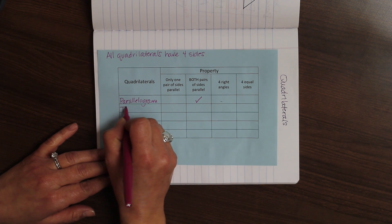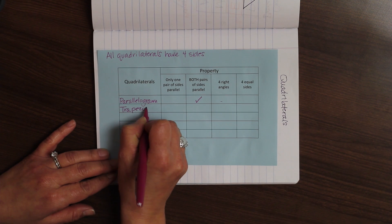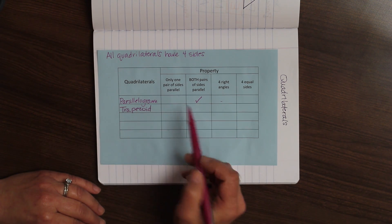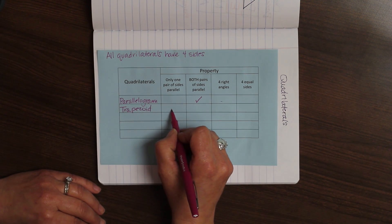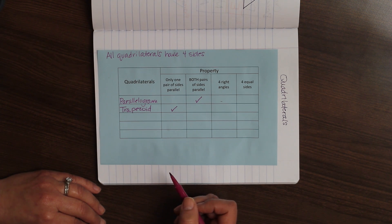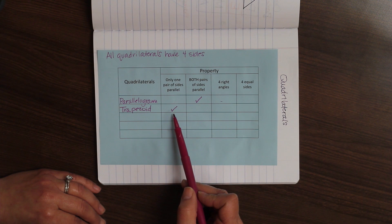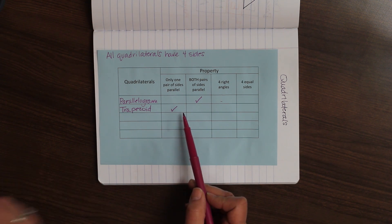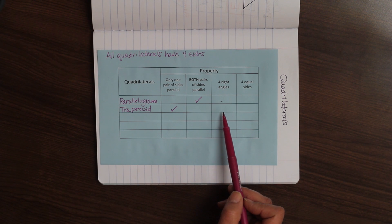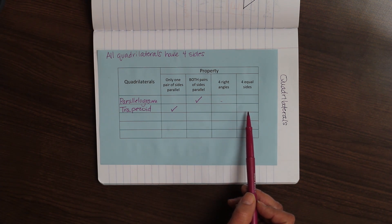The next one we're going to talk about is a trapezoid. Only one pair of sides is parallel. That is true. So, please put a check mark there. They only have one side that is parallel. Both pairs of sides are parallel? No. We just said that was not the case. Only one pair of sides are parallel.